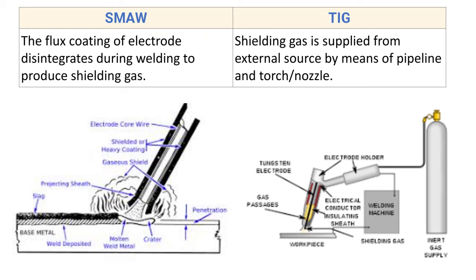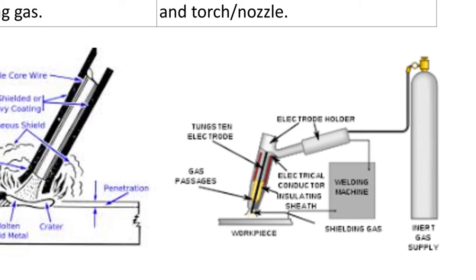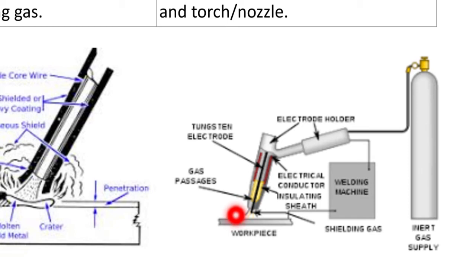For TIG, shielding gas is supplied from an external source by means of a pipeline, torch, or nozzle. As seen in the schematic, TIG uses a non-consumable electrode not coated with flux, so an additional shielding mechanism is needed. The shielding gas is stored in a cylinder, supplied through a pipeline to the nozzle, and delivered during welding to protect the weld bead from oxidation.